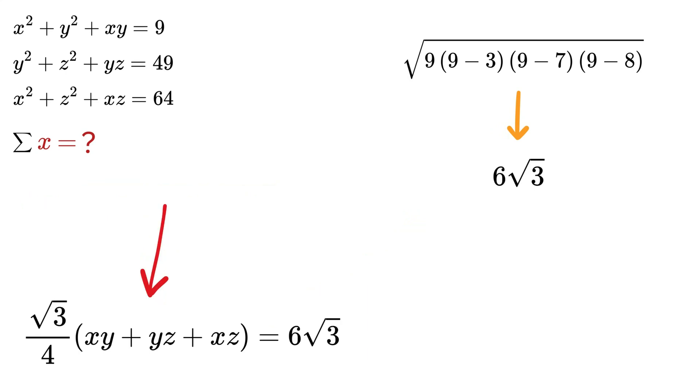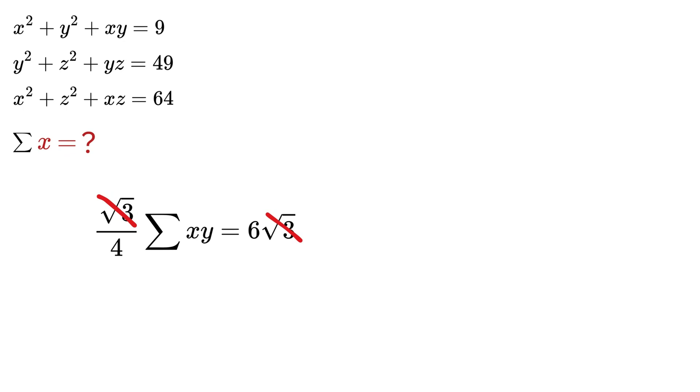Now equating both expressions for the area, we get (√3/4) times this sum, which we represent using summation of xy, equals 6√3. Canceling √3 and multiplying 4 on both sides, we get sum of xy as 24.